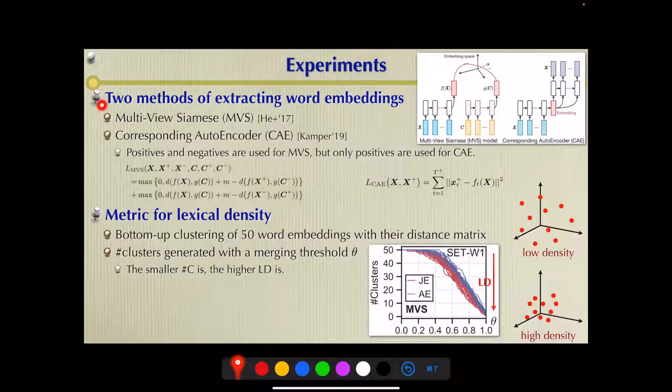Two methods of multi-view sparse and corresponding autoencoder were used for acoustic word embedding extraction. These two are loss functions for the two methods, and the theoretical differences between the two are explained in our paper.